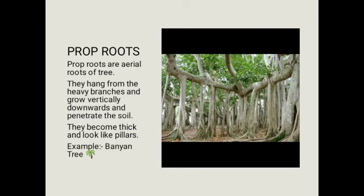Prop roots: Prop roots are aerial roots of a tree. They hang from the heavy branches and go vertically downward and penetrate the soil. They become thick and look like pillars. Example: banana tree. This picture will show you the banana tree.